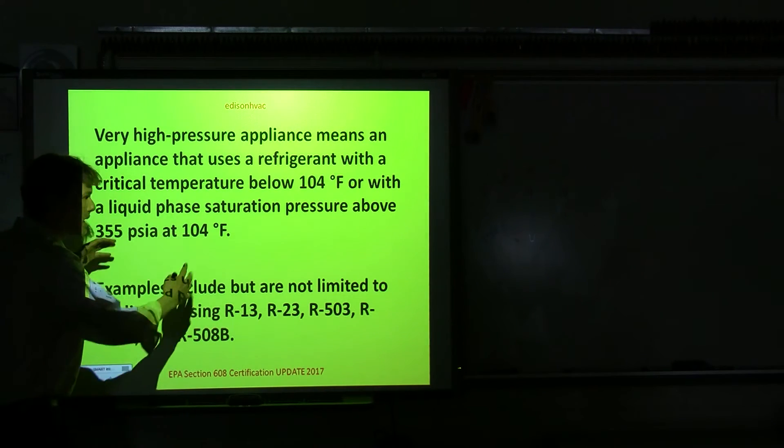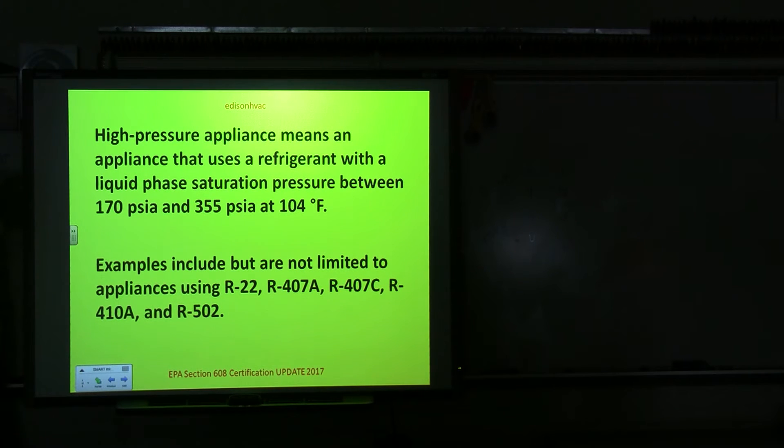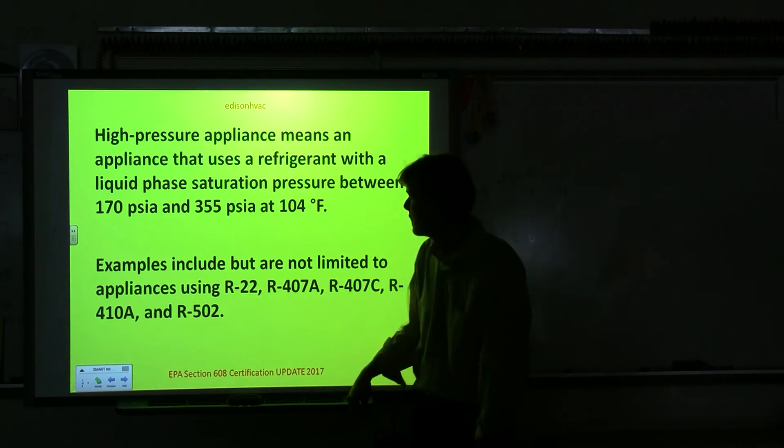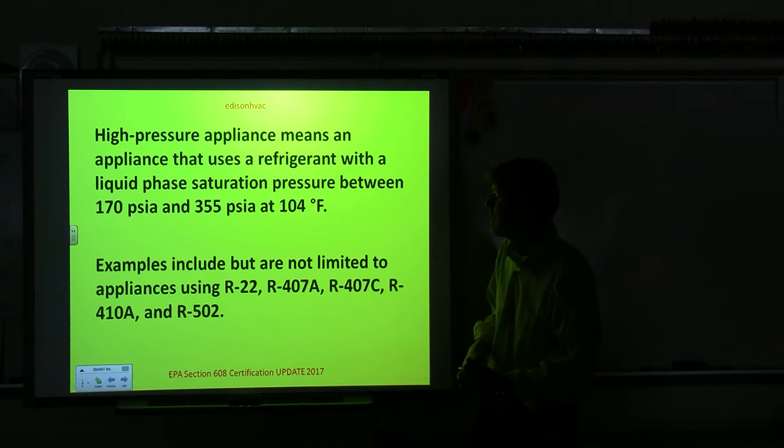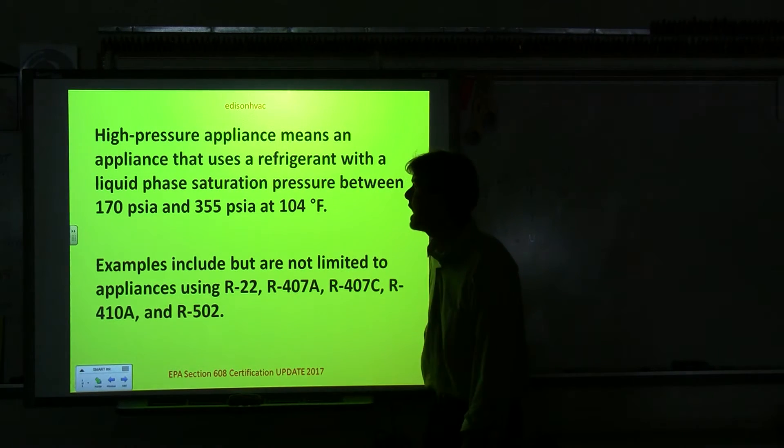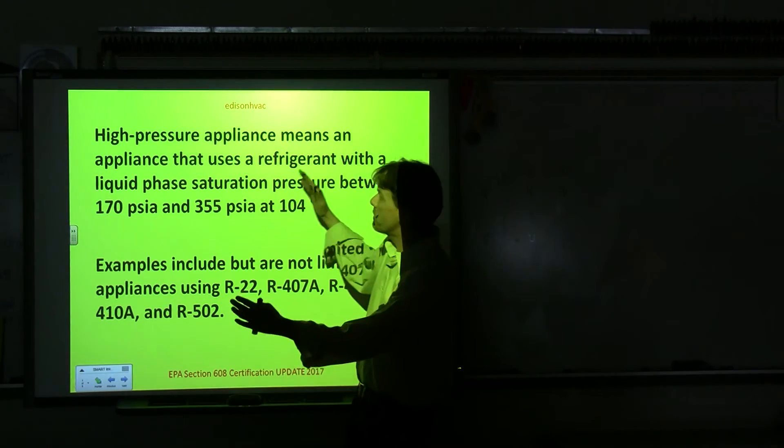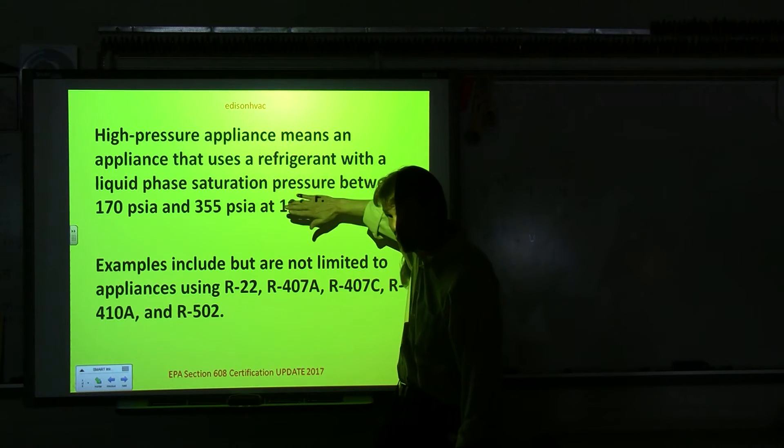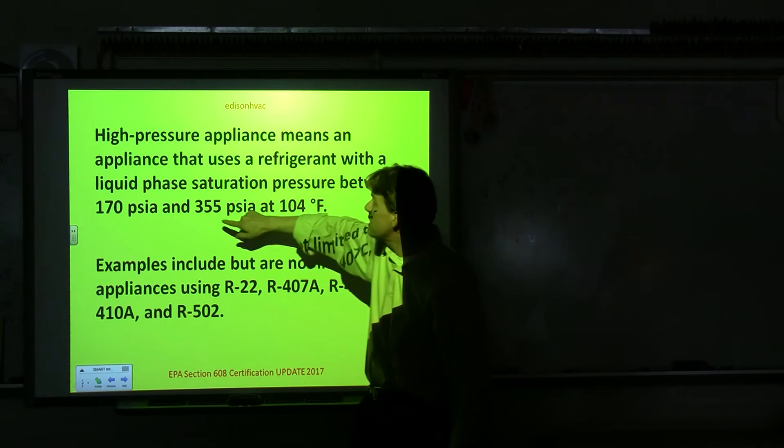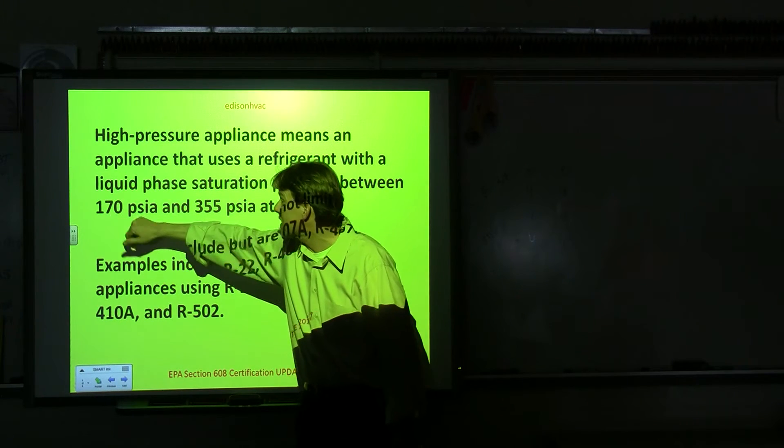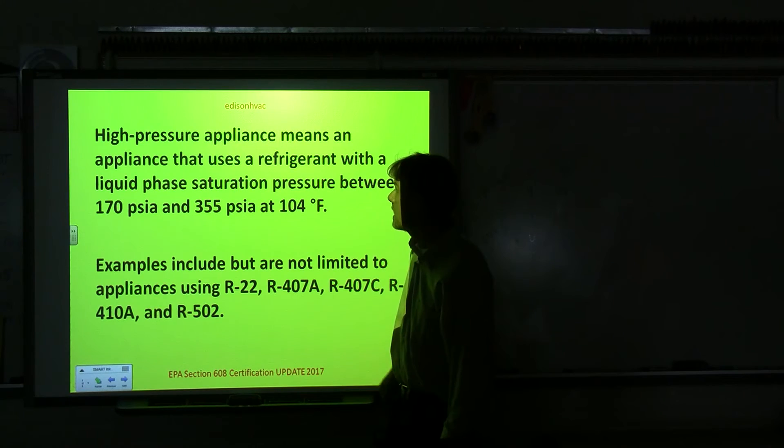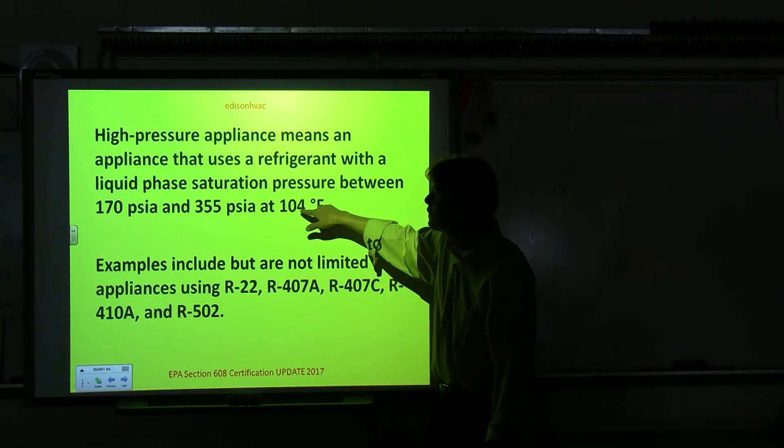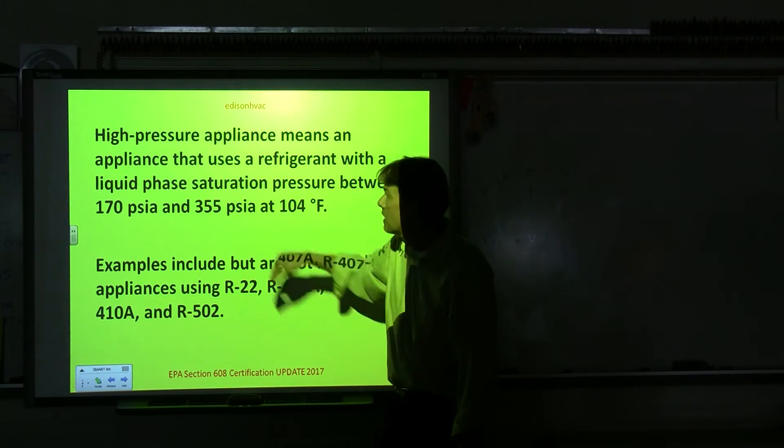They could be test questions on any of this stuff here. We don't know yet. High pressure appliances are what we mostly deal with, with the 410A and the R22, but that could also include 407A, 407C and R502 if anybody's still using any of that. But those had where the boiling point was between 170 PSIA or at 104 degrees, when it's boiling, we pressurize it to 144 degrees, then that means the boiling point is going to be between 170 PSIA and 355 PSIA. So these are the pressures, and this is the corresponding pressure I would expect to find at 104 degrees, any refrigerant that falls within these two ranges of pressure readings.